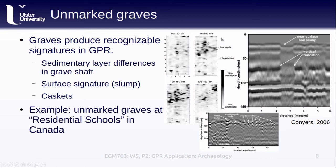One application of GPR that has gained worldwide attention is the mapping of unmarked graves at residential schools in Canada. Over a period of over 100 years, between 1863 and 1997, over 150,000 Indigenous children were taken from their homes and sent to these schools, often hundreds of miles from their homes. As a result of the conditions in these schools, in addition to abuse and neglect, many of these children died, though official records often failed to properly keep track of those deaths.